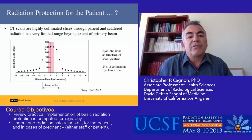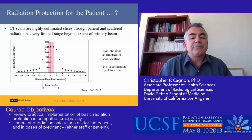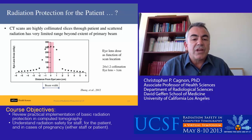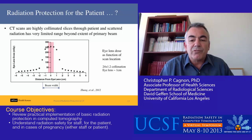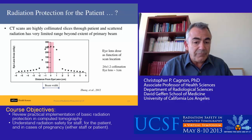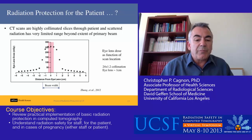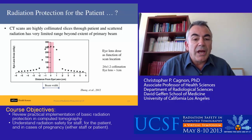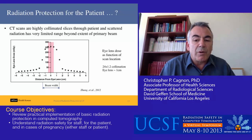Now let's talk about radiation protection for the patient. CT scans are very highly collimated slices through the patient, and scattered radiation has a very limited range beyond the primary beam. Here's a slide from Zhang et al. in 2012, where we looked at eye lens dose as a function of scan location. The beam width is 24 by 1.2 millimeters, and beyond that beam width, the actual dose drops off to a very small percentage. The pink bar represents the thickness of the lens of the eye itself.